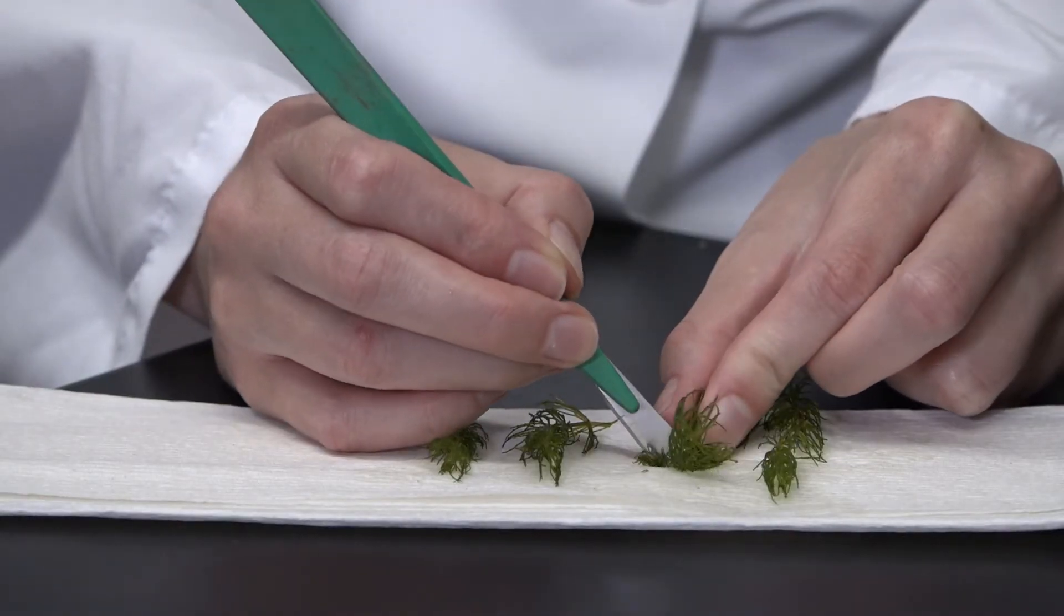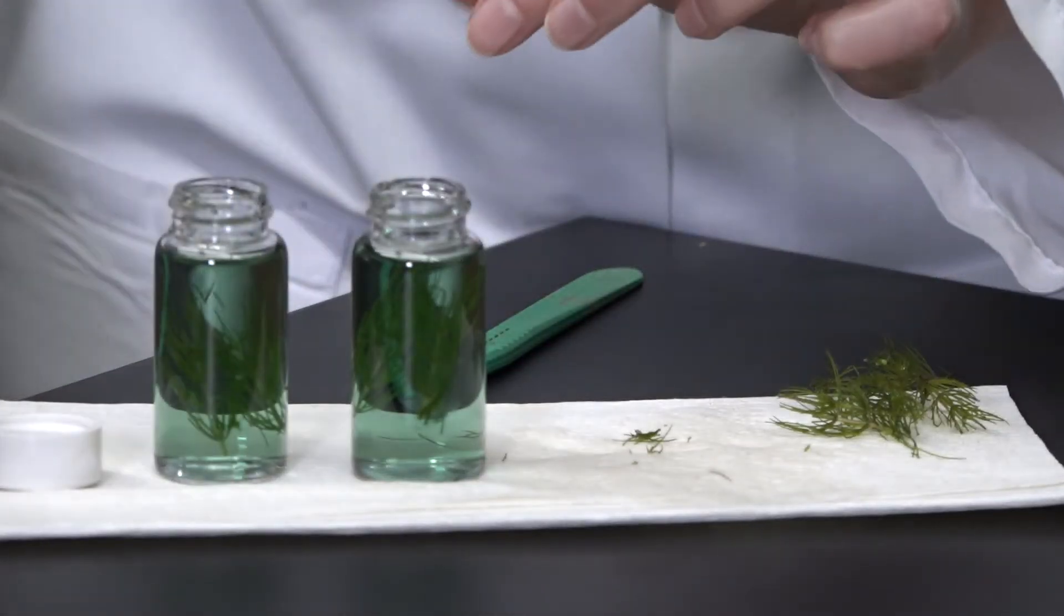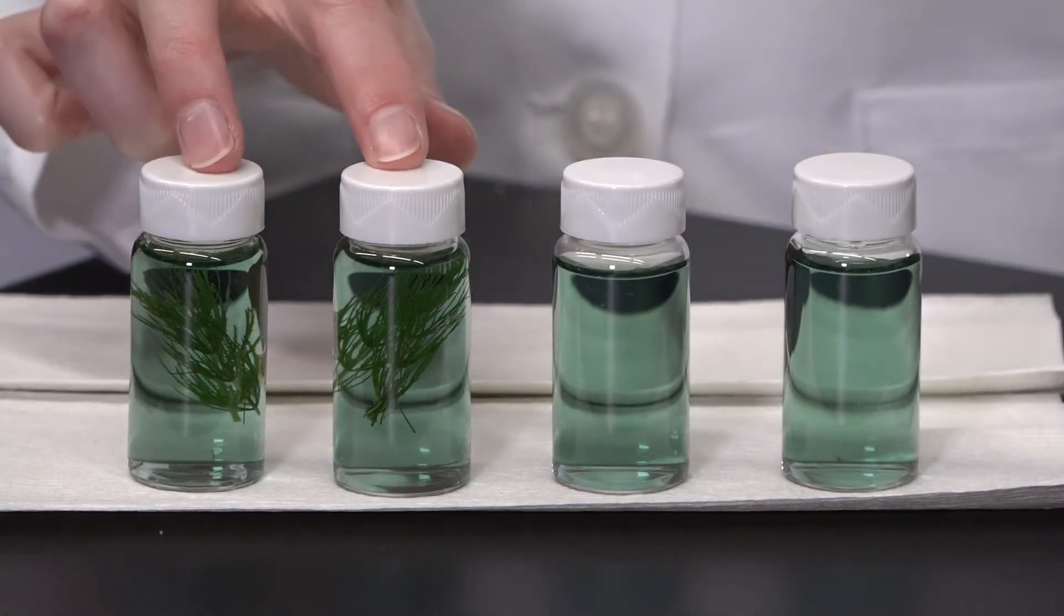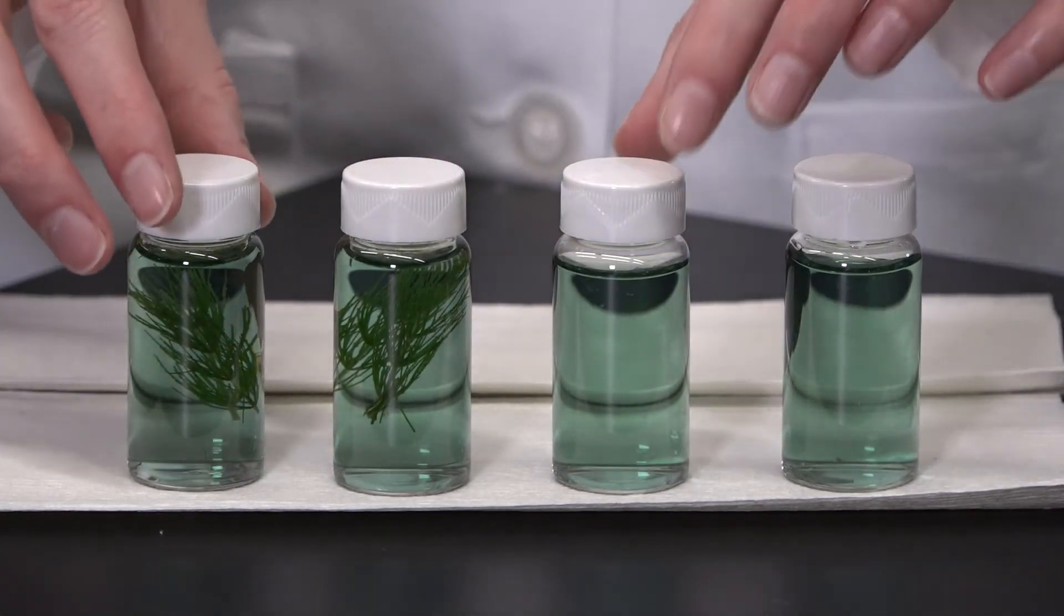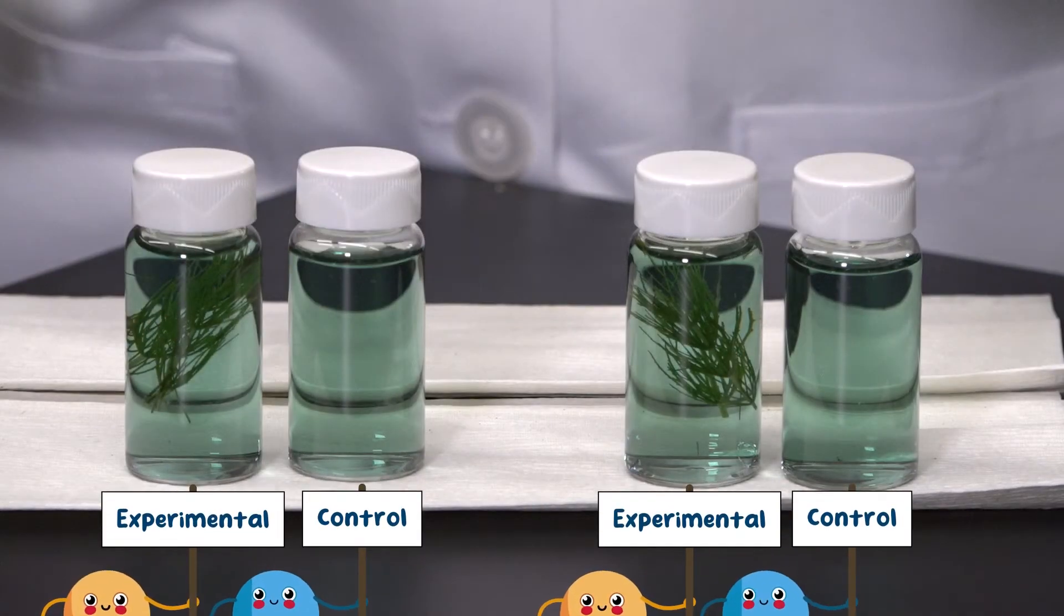Next, cut up four pieces of ceratophyllum so they're about the same length, and put two pieces into two of the vials, leaving the other two empty. We now have two empty vials and two plant vials. We're going to do two experimental treatments, one on each plant vial, and the empty vials will serve as the controls.